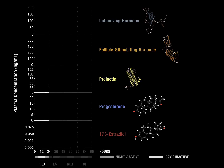The proestrus phase of the estrus cycle corresponds to the human follicular phase of the menstrual cycle and is defined by a pre-ovulatory increase in circulating 17-beta estradiol levels as well as a small surge in prolactin. The increase in 17-beta estradiol is followed by a rise in circulating luteinizing hormone and follicle stimulating hormone levels.